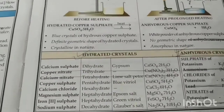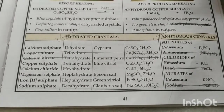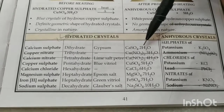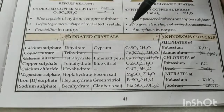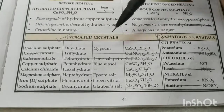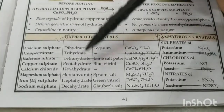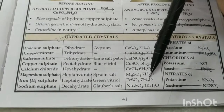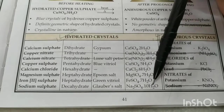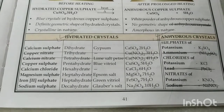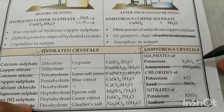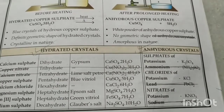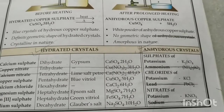We need to learn the formulae, names, and fixed number of water molecules in various hydrated crystals. For example: calcium sulfate (gypsum) has 2H₂O; calcium chloride hexahydrate has 6H₂O; Epsom salt is magnesium sulfate heptahydrate; green vitriol is iron sulfate heptahydrate; Glauber's salt is sodium sulfate decahydrate; white vitriol is zinc sulfate heptahydrate. Some salts like potassium chloride, sodium chloride, and sugar are crystals but have no water of crystallization — they are anhydrous.